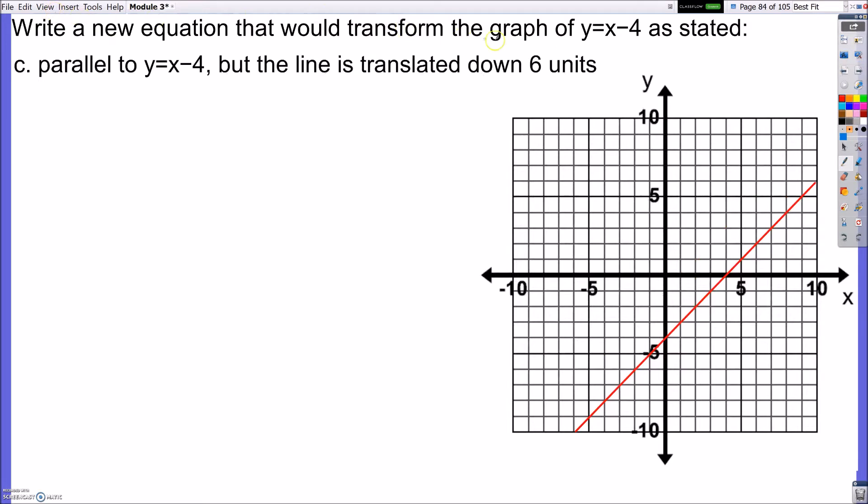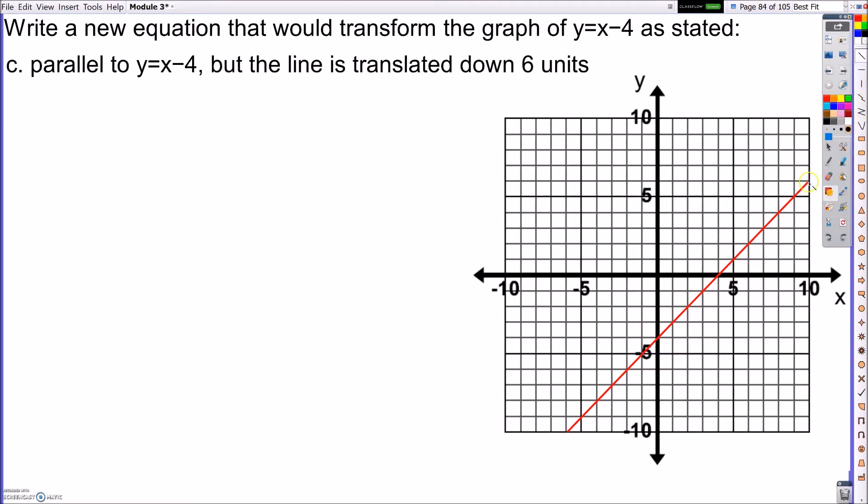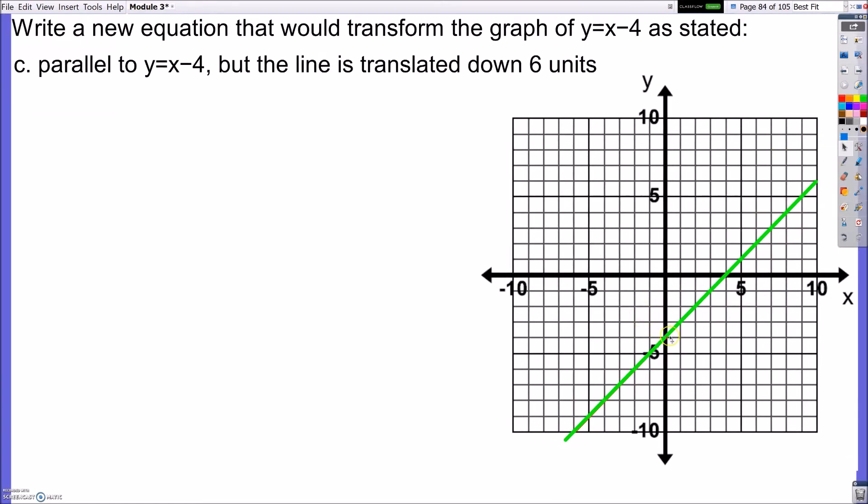All right, now write an equation that would transform y equals x minus 4 as stated. It wants to be parallel to y equals x minus 4, but the line is translated down 6 units. So same idea now. If this is my line, I'm going to overlap it and I'm going to have a line that's translated down 6 units.